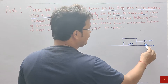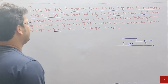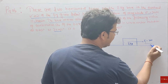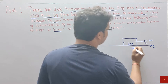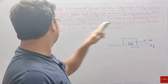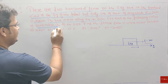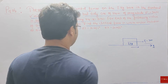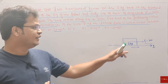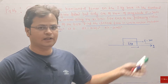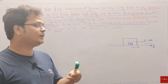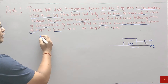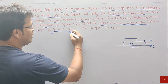The box moves along the x-axis. For each of the following values of acceleration ax of the box, find the second force in unit vector notation. There are two forces acting on it — one visible and one not. The acceleration along the x-axis is given as 10 m/s², 20 m/s², and zero.